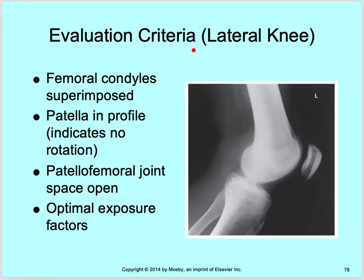Your evaluation criteria for the lateral knee: you want your femoral condyles superimposed — both of them right here are well superimposed. Your patella is in profile — you can see that patella in profile. And then your patellar-femoral joint space is open; you can see this open joint space all the way through. Then optimal exposure factors.